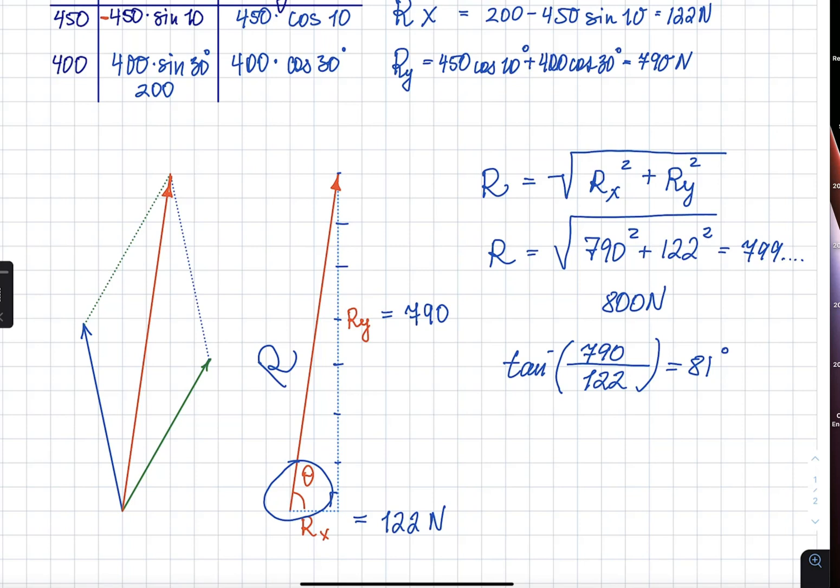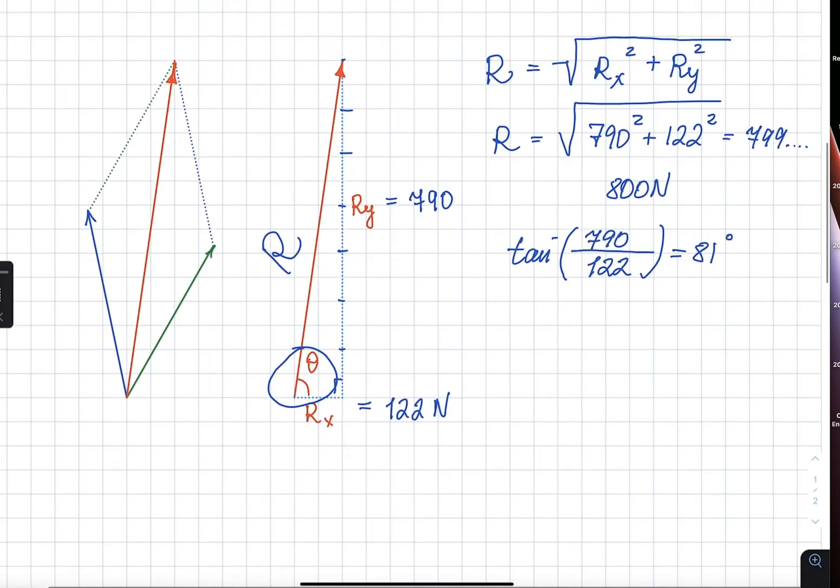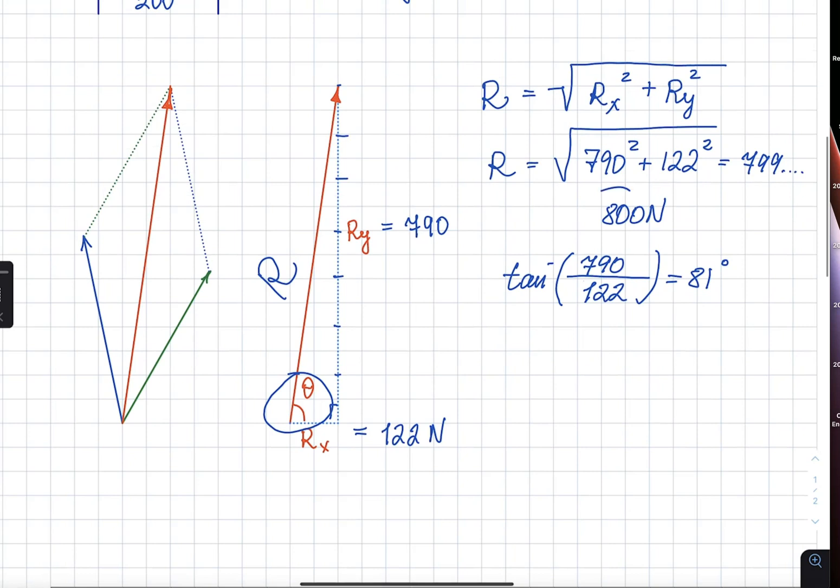81 degrees above the horizontal. Since we are not given north, east, west, south, we can just mark it as to the horizontal. So, 81 degrees is your direction of the vector of the force. Now, that answers part A. What is the resultant vector of these two forces? We gave magnitude and direction. Magnitude was almost 800 newtons, and direction is 81 degrees to the horizontal.